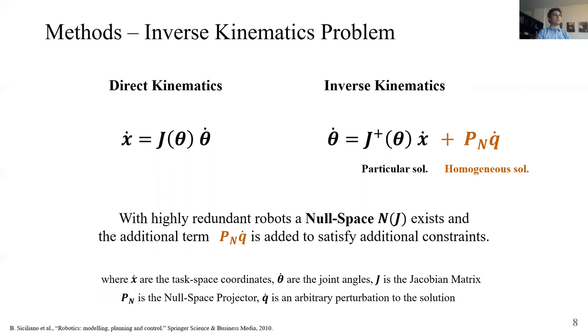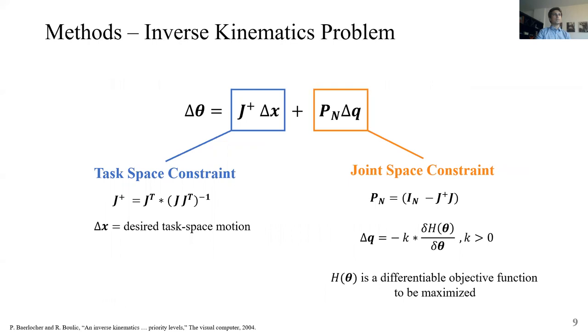As we said, Harmony is redundant, so a null space exists, which means that there is a bunch of different robot configurations that all solve the same inverse kinematics problem. In this way, we can add a homogeneous solution to the particular solution and this homogeneous solution explores the null space to achieve additional constraints. The homogeneous solution is defined as the multiplication between the null space projector, Pn, and a perturbation to the particular solution, which is q dot.